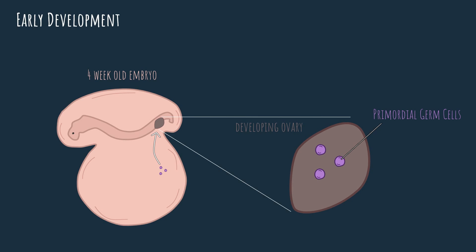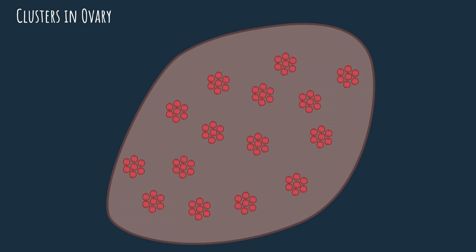Once the primordial germ cells reach the developing ovaries, they differentiate into a new type of cell called oogonium, or oogonia in plural. Let's take a closer look at the oogonia inside the ovary and see what they do. At this point, the oogonia have a simple role — all they do is expand their numbers through mitotic divisions, forming many, many clusters of oogonia that we see here on the screen.